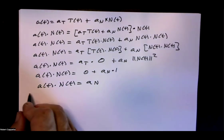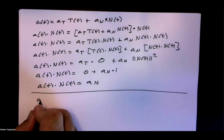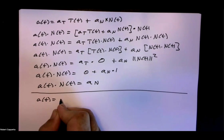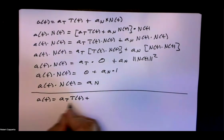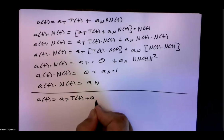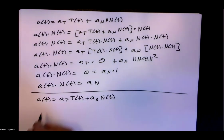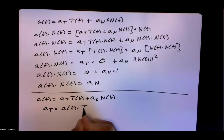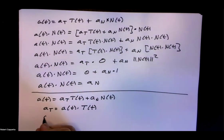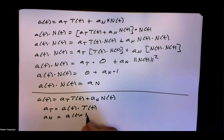Let's collect all the key facts from today's lesson. The acceleration a of t equals a sub t times T of t plus a sub n times N of t, where a sub t and a sub n are scalars — not vectors. The tangential component a sub t is the dot product of the acceleration with the unit tangent vector, and the normal component a sub n is the dot product of the acceleration with the unit normal vector.